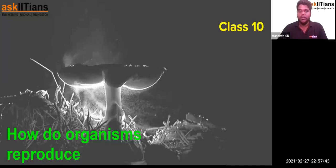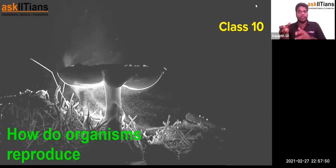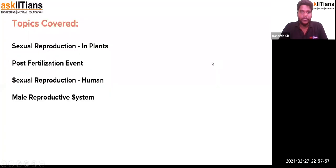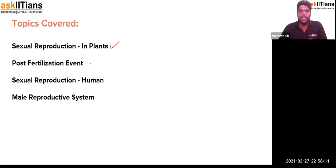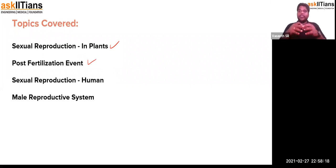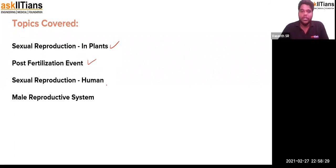Today we're going to continue from where we left off and proceed with the following content. Topics we're going to cover today include sexual reproduction in plants in detail — what happens before and after fertilization. We will also cover post-fertilization events: how the flower is modified into the fruit and seed, and then an explanation of the male reproductive system.